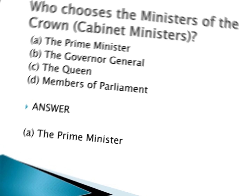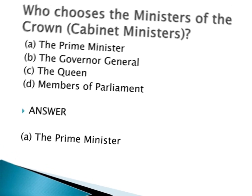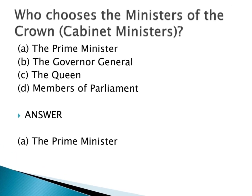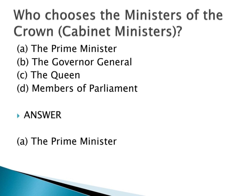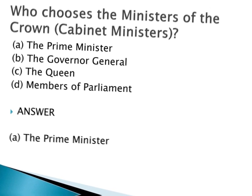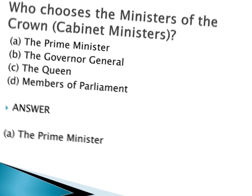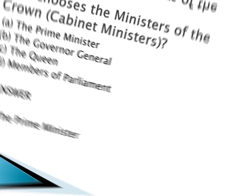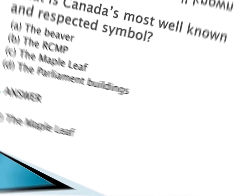Who chooses the ministers of the Crown — Cabinet ministers? a. The Prime Minister. b. The Governor General. c. The Queen. d. Members of Parliament. Answer: a. The Prime Minister.